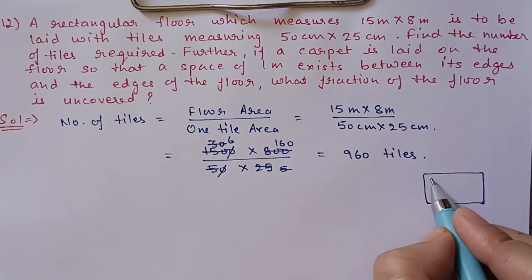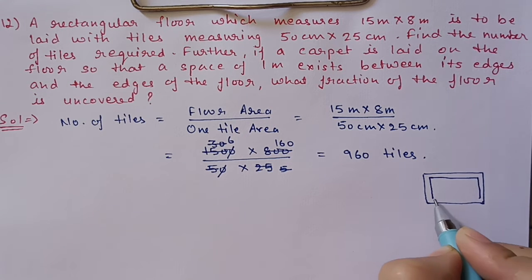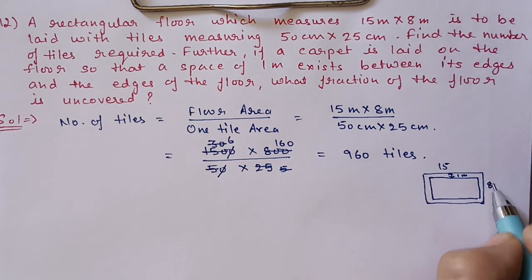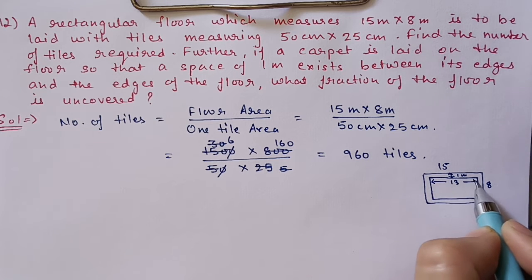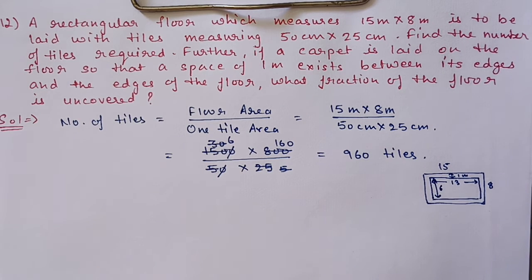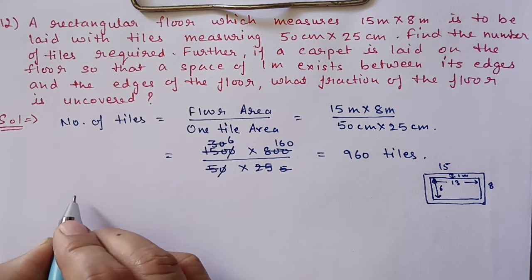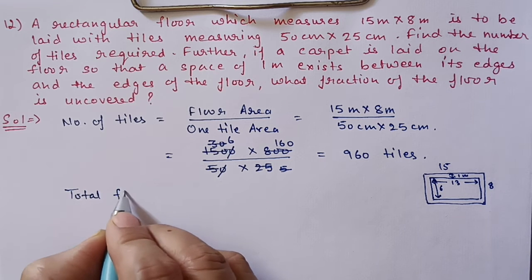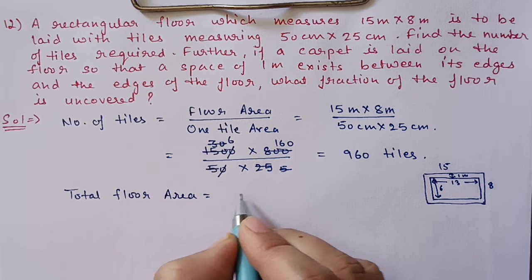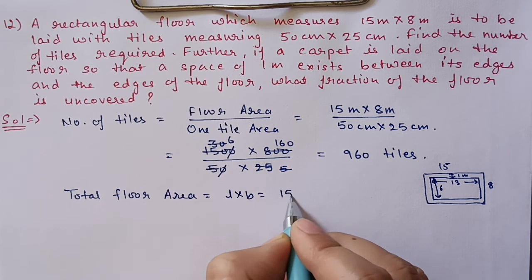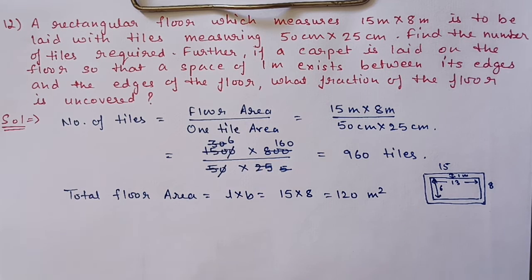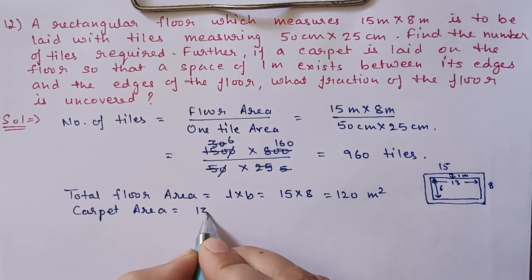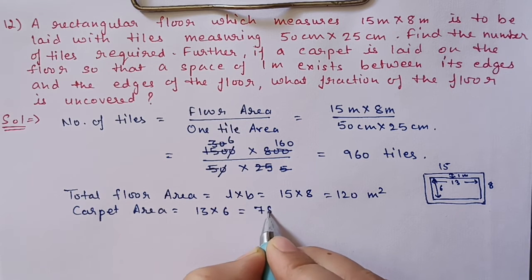If this is our floor and we lay the carpet leaving 1 meter all around, the floor is 15 by 8. Leaving 1 meter on each side, the carpet dimensions become 13 by 6. So total floor area is 15 × 8 = 120 square meters and carpet area is 13 × 6 = 78 square meters.